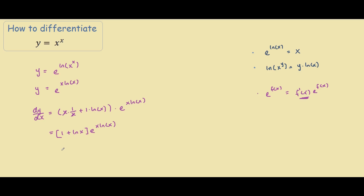So the last step is to get rid of the function, so we have 1 plus ln of x. And remember, e to the ln cancels out each other, so e cancels out the ln. And we move this x back, so we have x to the power of x. And this is how we differentiate y equals x to the x.